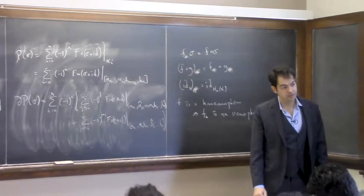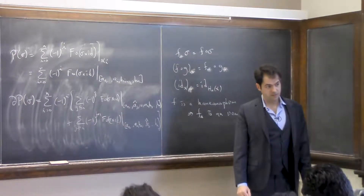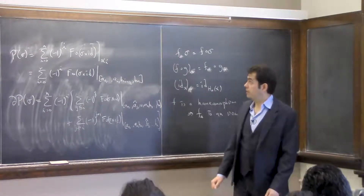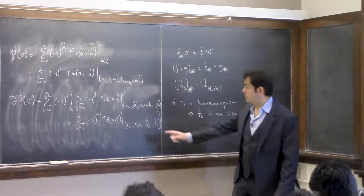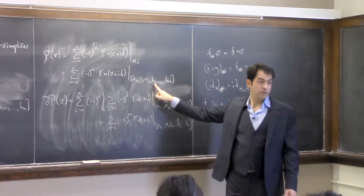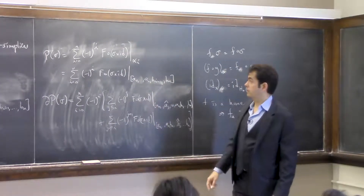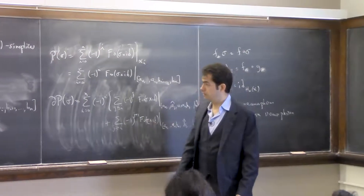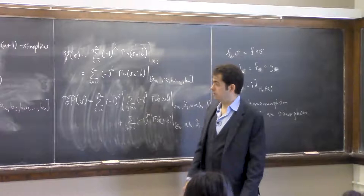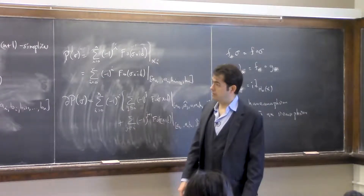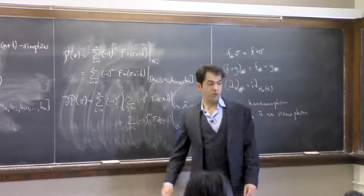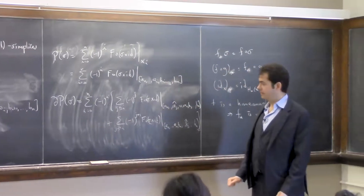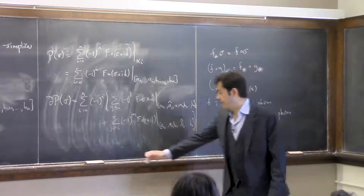Question: do the indices on P(sigma) run from zero to n? Yes, they run from zero to n. It's possible the wrong thing was written on the board last time, but it should be from zero.